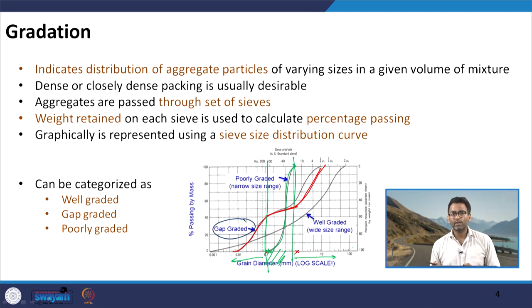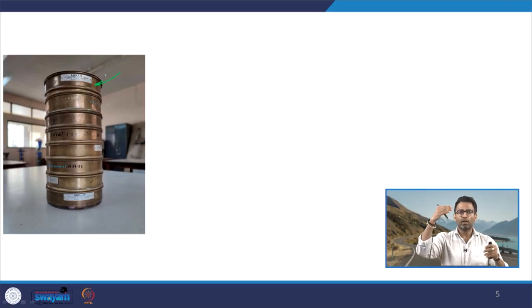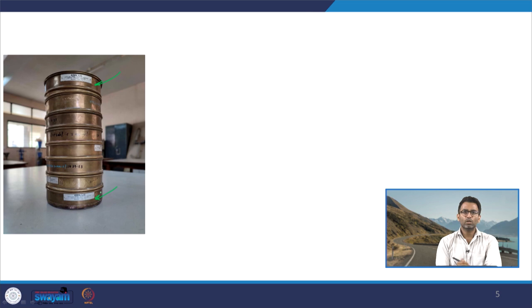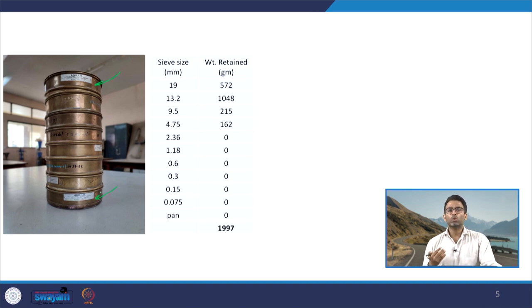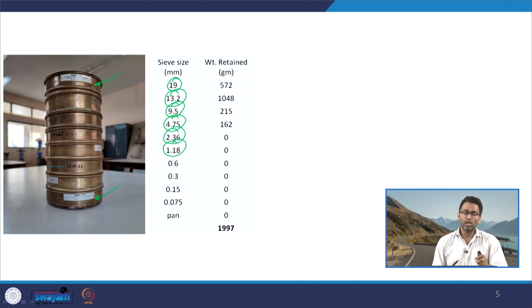To draw the sieve size distribution curve for a given gradation, we set up sieves in decreasing order with the largest at the top and a pan at the bottom. The standard sieves used in the Indian system for bituminous and concrete mixtures include: 19 mm, 13.2 mm, 9.5 mm, 4.75 mm, 2.36 mm, 1.18 mm, 600 microns, 300 microns, 150 microns, 75 microns, and pan.